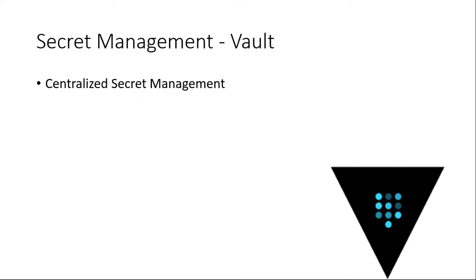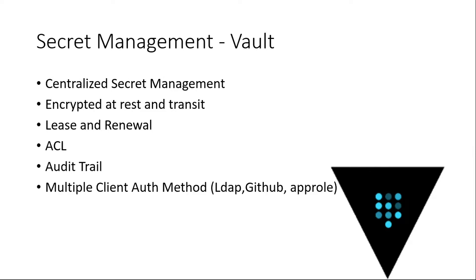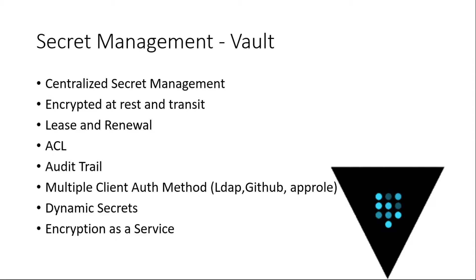What does Vault actually provide? It provides centralized secret management, encrypts at rest and in transit, has lease and renewal of tokens, access control, and an audit trail of who accessed what. It provides multi-client authentication — you can use LDAP, GitHub, app roles. It also provides something called dynamic secrets, which is pretty cool, and it's actually an encryption-as-a-service — you can use it for encrypting your data too.